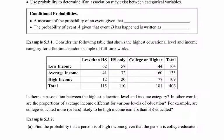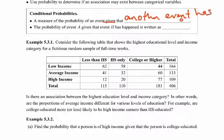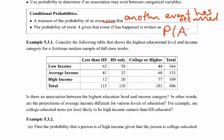Let's start with what we mean by conditional probability. It's a measure of the probability of an event given that another event has occurred. So if we know one event has happened, what is the probability that another event will occur based on knowing that first event happened? The notation for the probability of event A given event B uses a vertical line: P(A|B), meaning given that we know B has occurred.